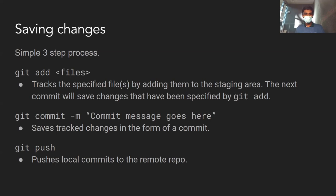Finally, git push is the last saving-changes command. Technically it's optional — if you're working entirely locally without a remote associated with your Git repository, you can just do git add and commit and everything will be saved on your device. But if you want to collaborate with someone and want somebody else to have access to your Git repository, you would add a remote — maybe on GitHub — and push your commits using git push.